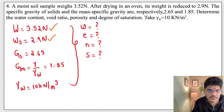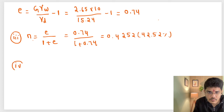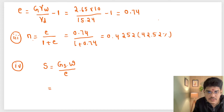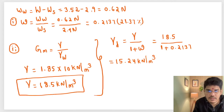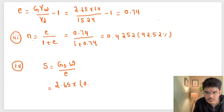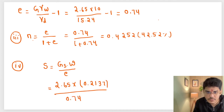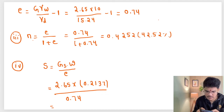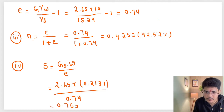Next, the degree of saturation S is asked. We know that e times S equals Gs times w, so S equals Gs times water content divided by void ratio: 2.65 times 0.2137 divided by 0.74, giving 0.7652, that means 76.52 percent.